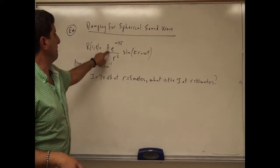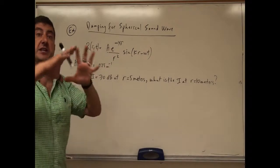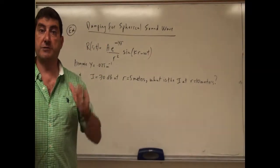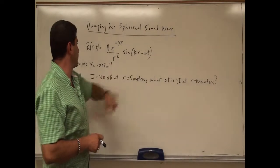So the amplitude varies as A E to the minus gamma R divided by R squared, because the surface area of the sphere is proportional to the distance squared, 4 pi R squared. Then you have sine of kr minus omega t.